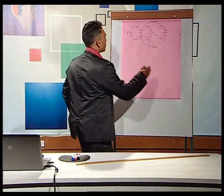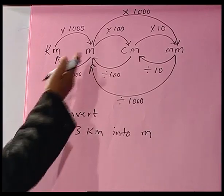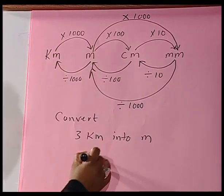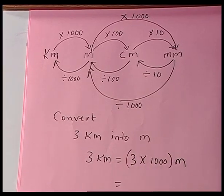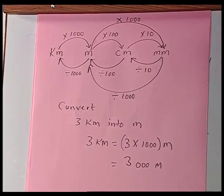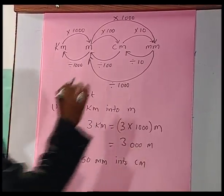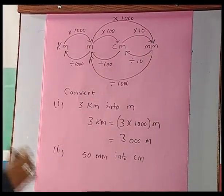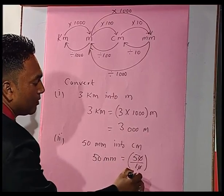Let me now show you how to do the conversion. Suppose you are asked to convert 3 kilometers into meters. From kilometer to meter, we must multiply by 1,000. So 3 kilometers equals 3 times 1,000 equals 3,000 meters. Now if you want to convert 50 millimeters into centimeters, from millimeter to centimeter we divide by 10. So 50 millimeters equals 50 divided by 10 equals 5 centimeters.